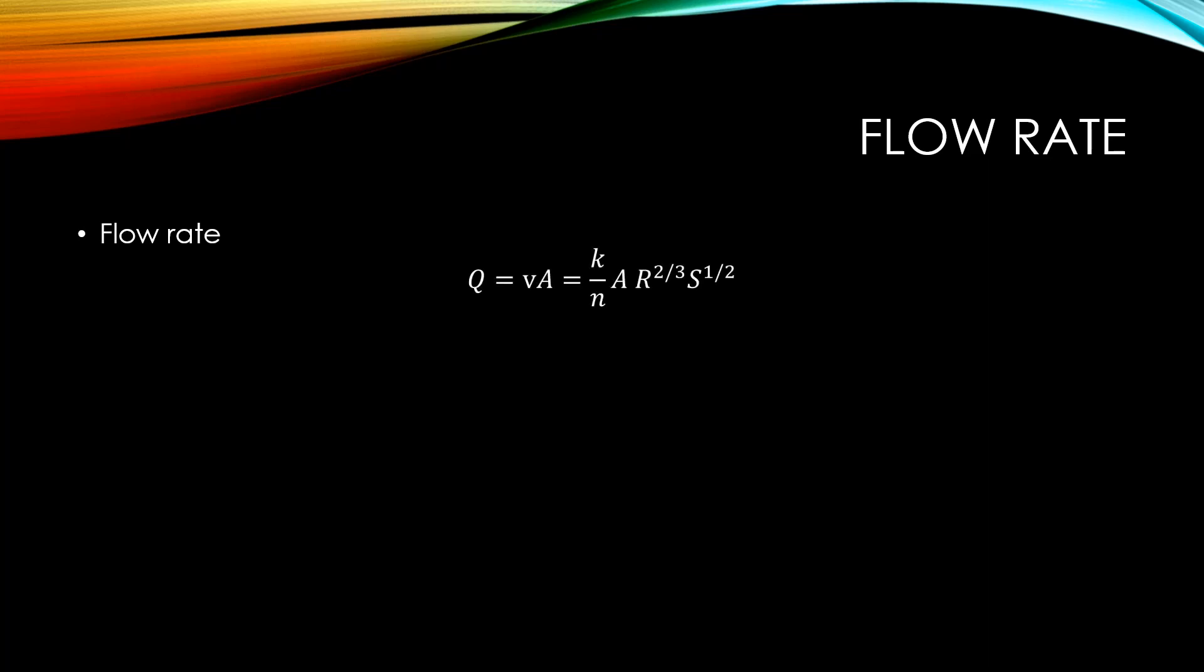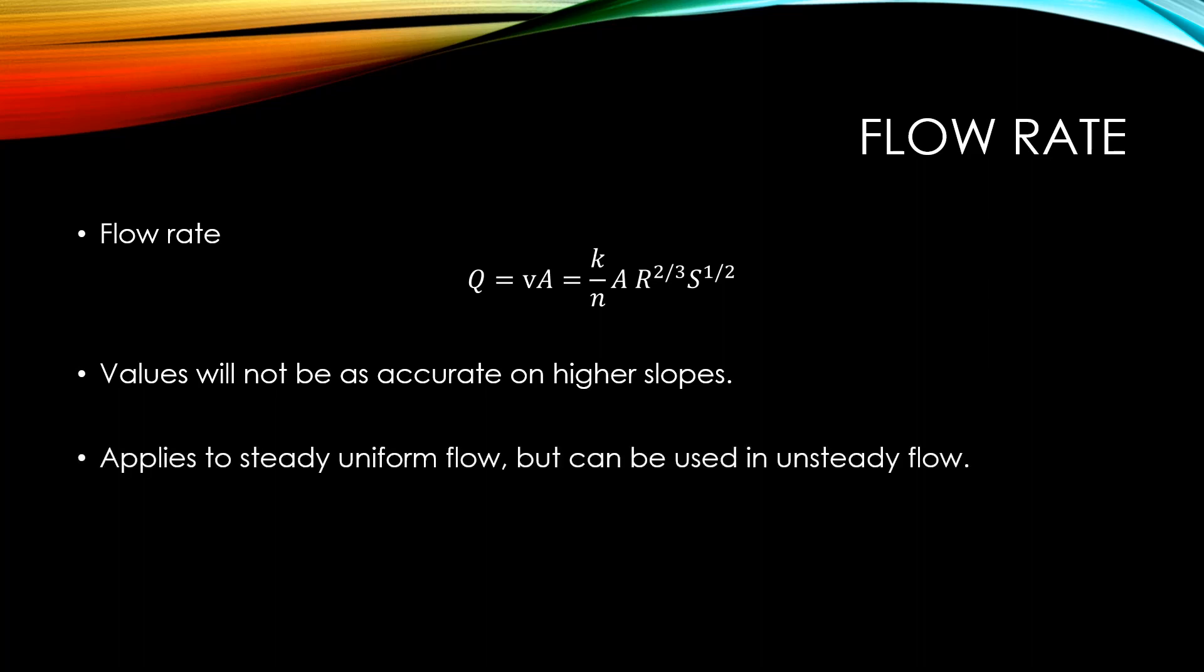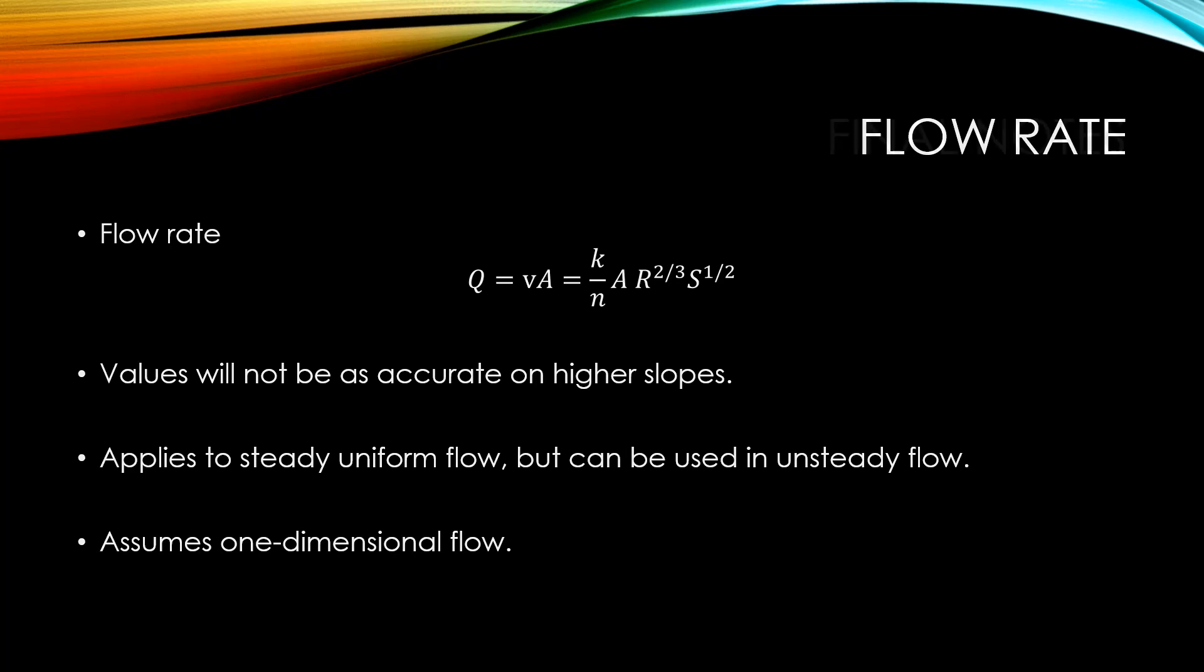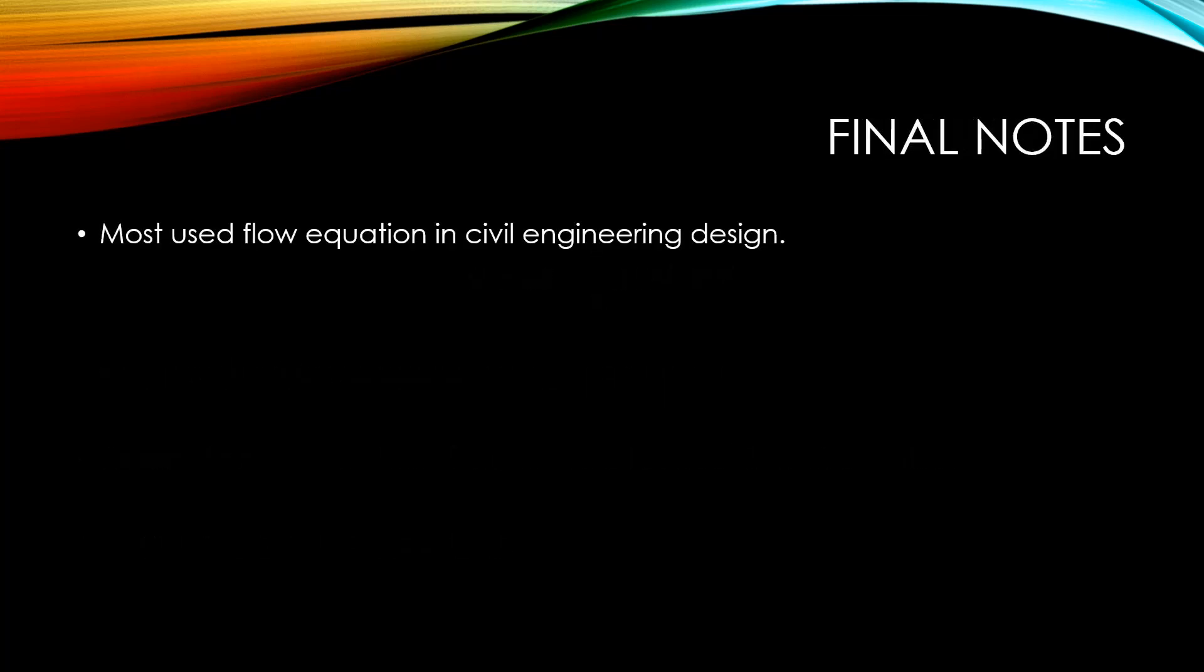The flow rate can be found using the continuity equation. Knowing that flow rate is equal to the product of average velocity times the area, we can multiply Manning's equation for velocity times the cross-sectional area to obtain the following expression for flow rate. Typically, these values will not be very accurate if the slope is very high. Also, these values apply to steady uniform flow. However, they may be used in unsteady flow using several methods. It is important to note that these values assume one-dimensional flow.